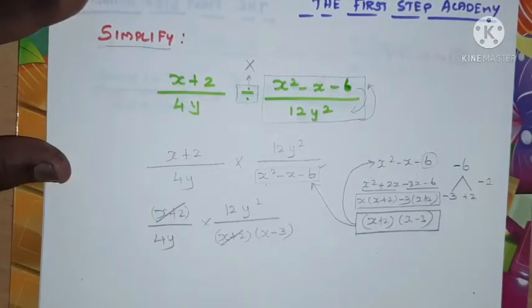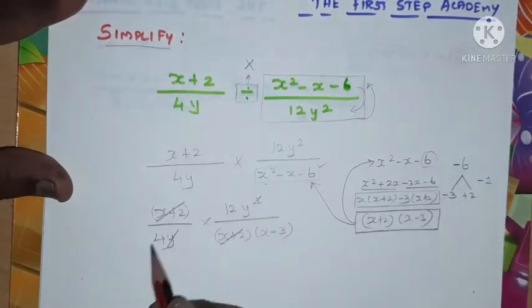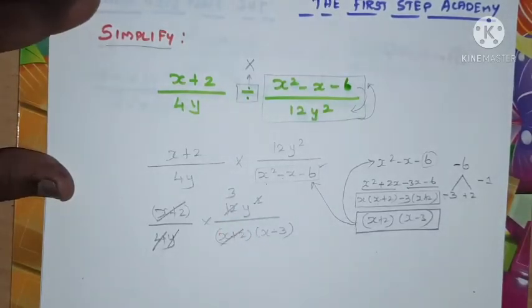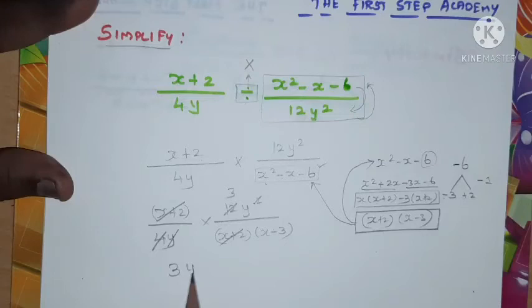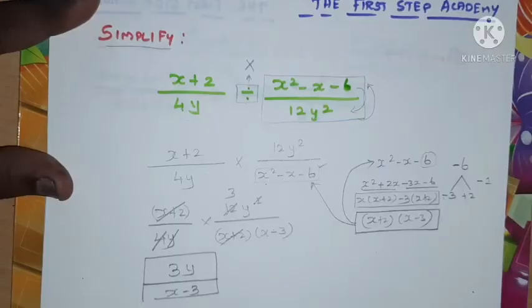Now we'll cancel (x+2) and (x+2), one y and y will cancel, and 4 and 12 will cancel. The answer is 3. Hence we'll get 3y/(x-3), and this is the answer for this particular problem.